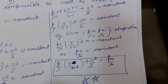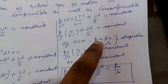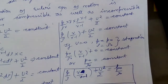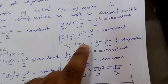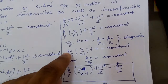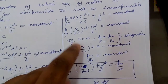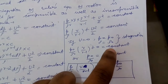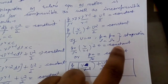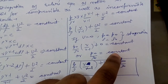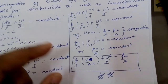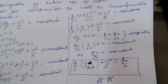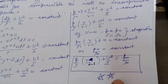If u = 0, the stagnation conditions p = p₀ and ρ = ρ₀ are reached. Substituting gives p₀/ρ₀ · γ/(γ−1) = constant. Since γ/(γ−1) is constant it merges into the constant term, leaving p₀/ρ₀ = constant. Therefore the final relation is: p/ρ · γ/(γ−1) + u²/2 = p₀/ρ₀ = constant. This is the most important relation and concludes the topic of stagnation properties.